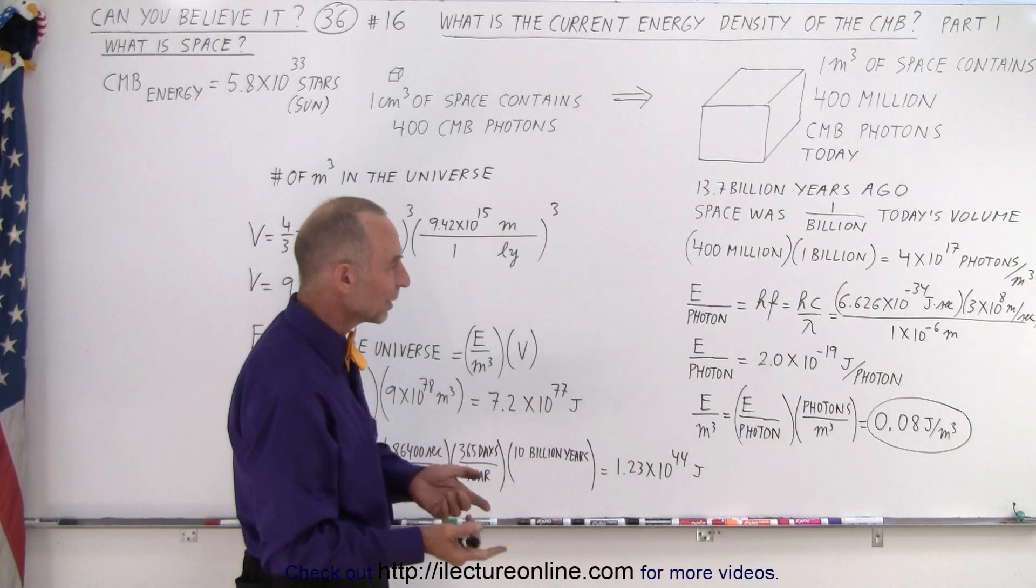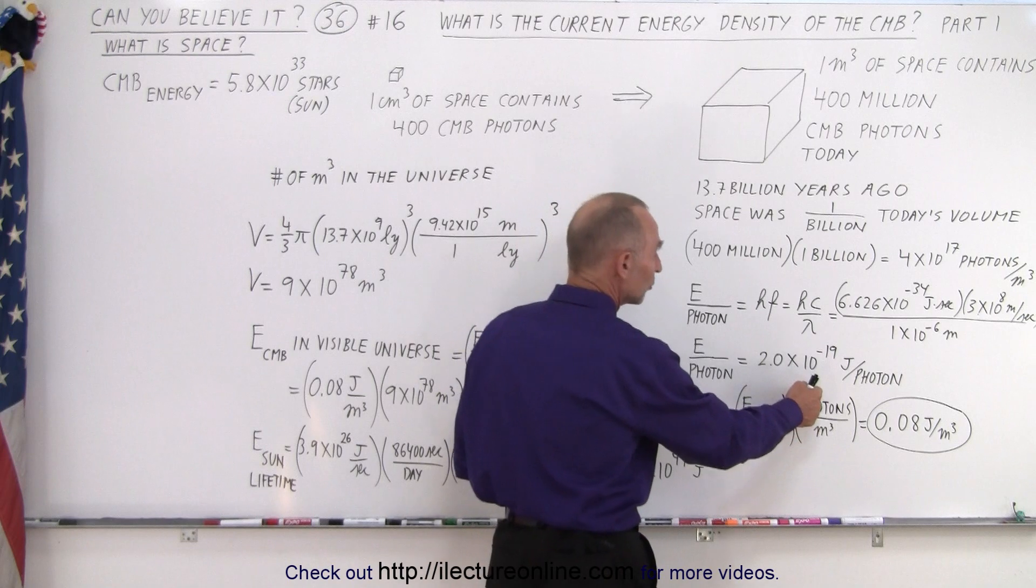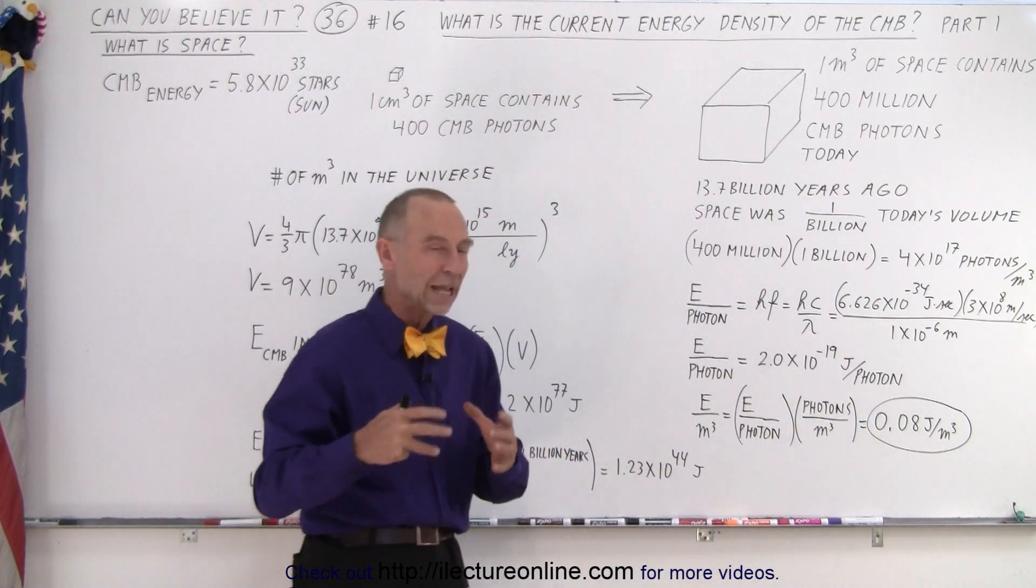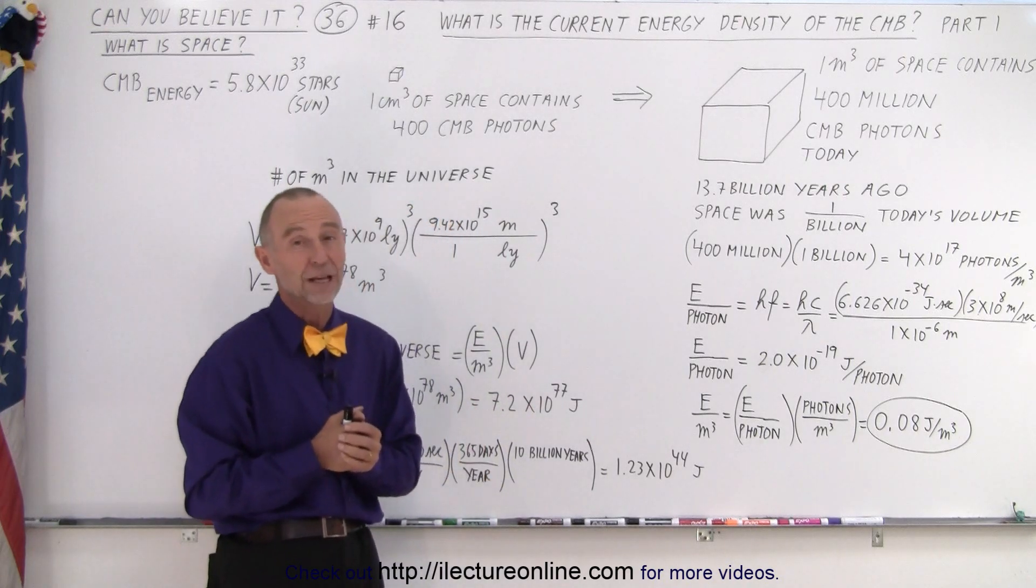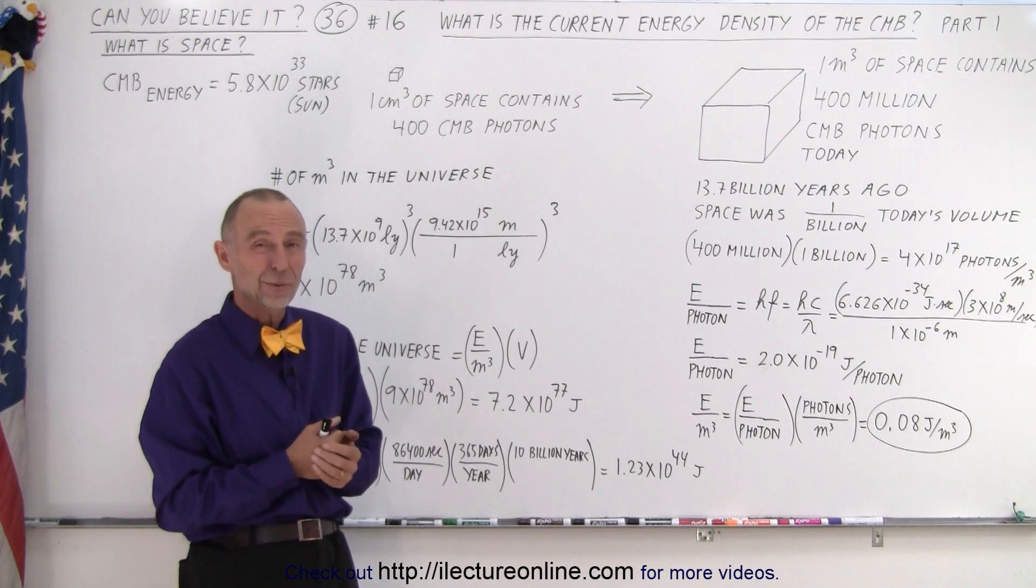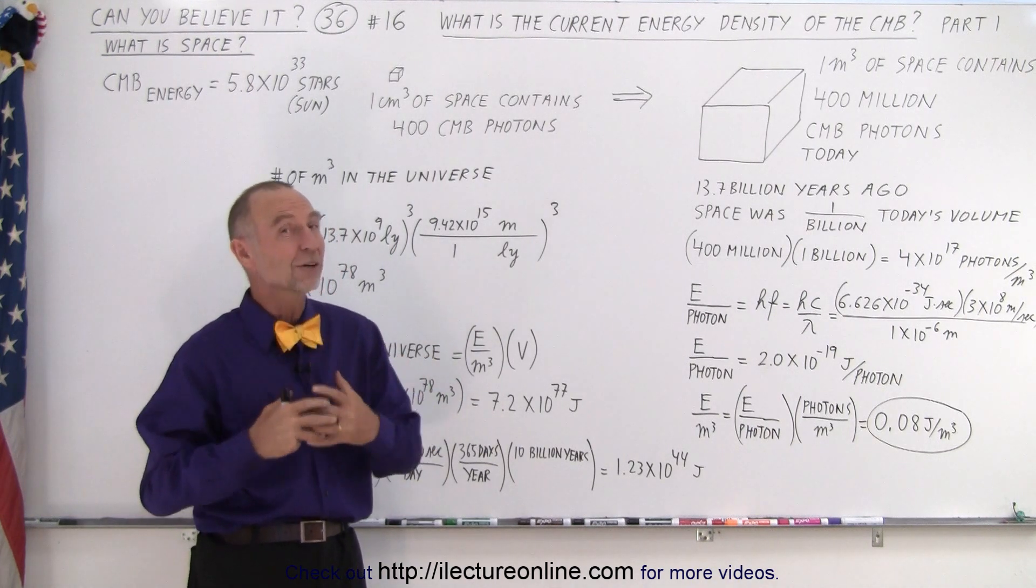So now, if we then convert that to the amount of energy per cubic meter, knowing how many photons there were back then per cubic meter, we have an energy content of 0.08 joules per cubic meter. Now, you may say, well, that doesn't sound like a lot. 0.08, that's less than a tenth of a joule per cubic meter.